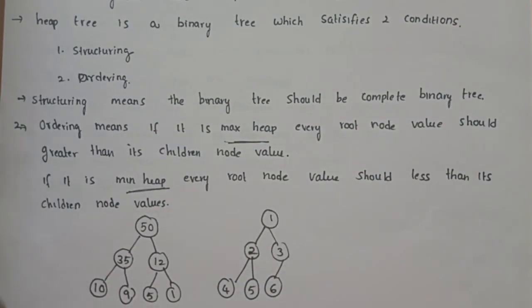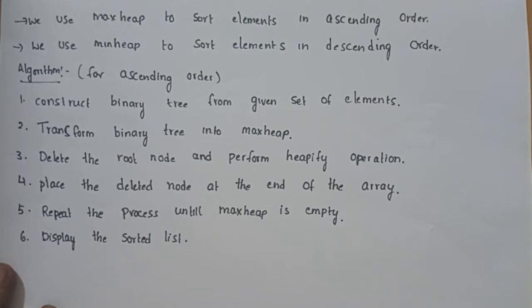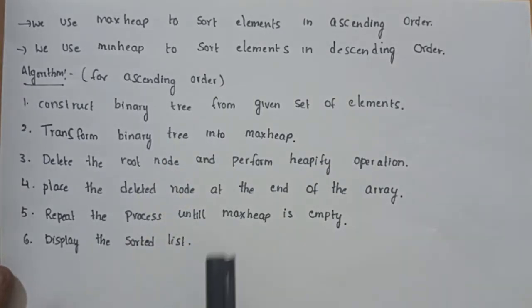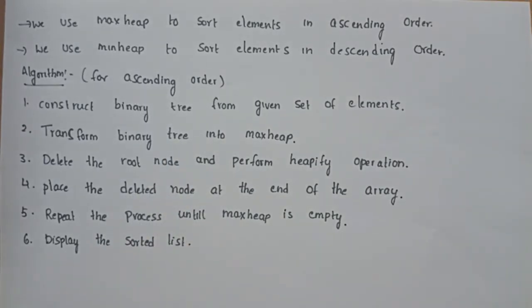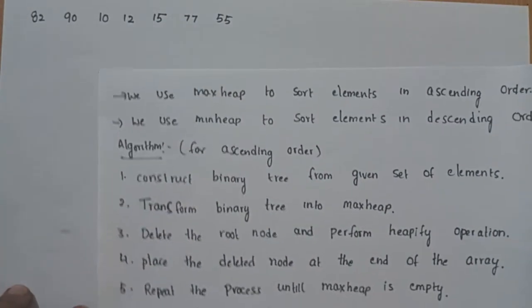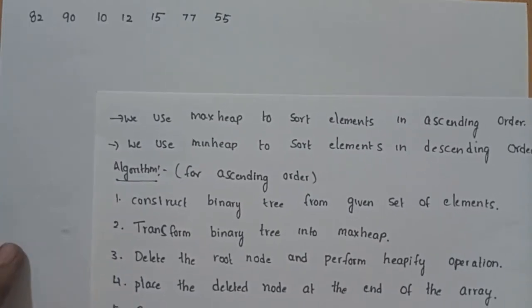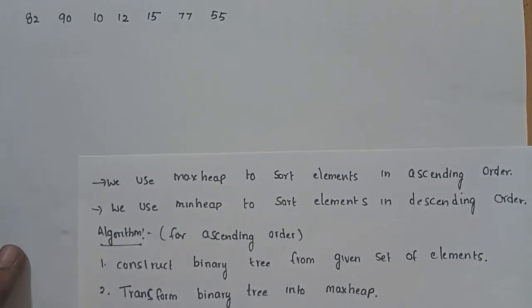The heap sort technique uses this heap tree for sorting. For ascending order we use max heap, and for descending order we use min heap. The first step of the algorithm is to construct a binary tree from the given set of elements. In the binary tree for the heap, every node has a maximum of two children nodes.